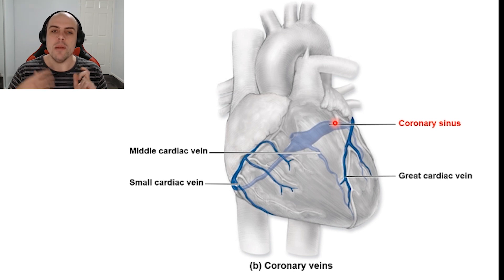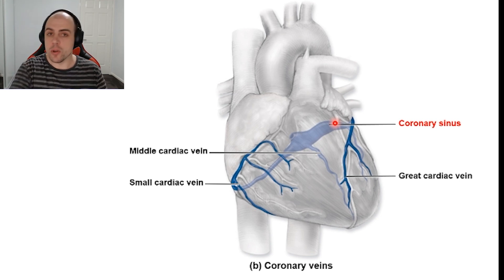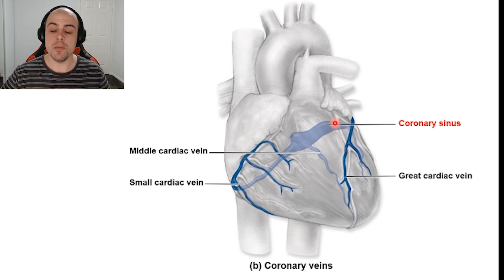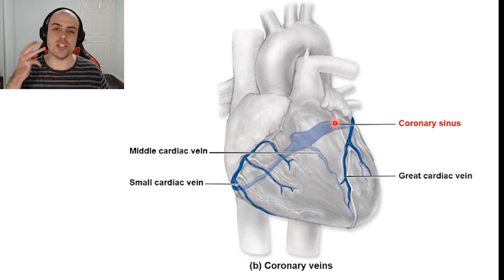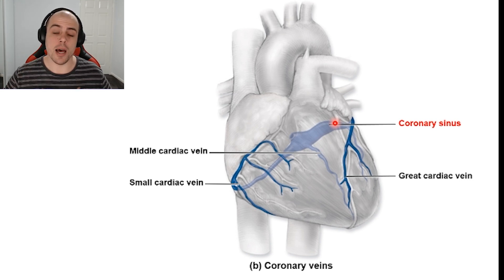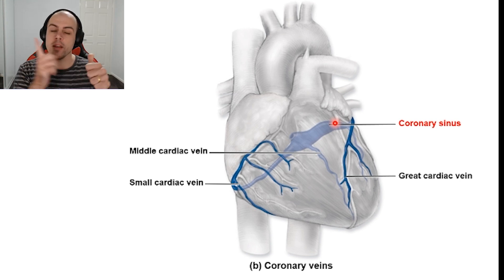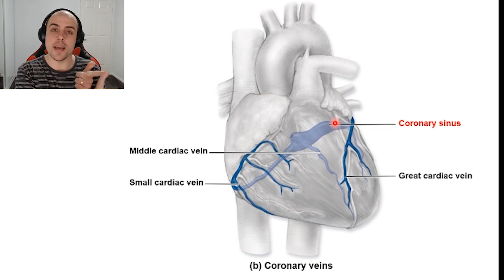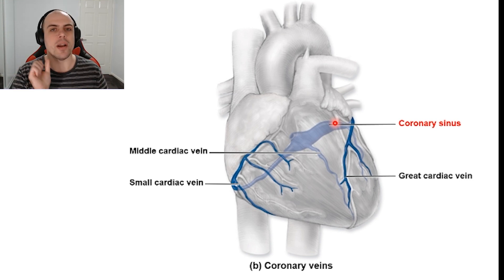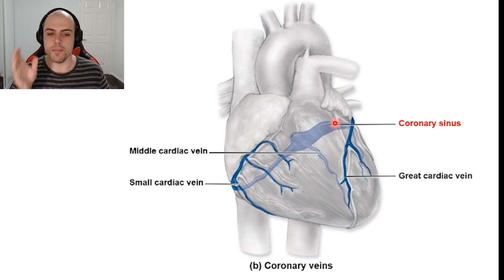When looking at the right atrium and our whole pulmonary and systemic circulation, there are actually three main things that supply blood to the right atrium: our inferior vena cava, our superior vena cava, and our coronary sinus, which deposits that deoxygenated blood from the heart.